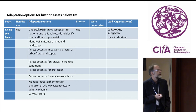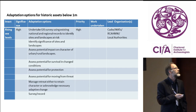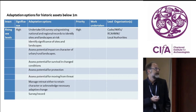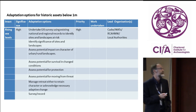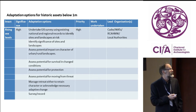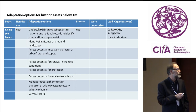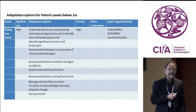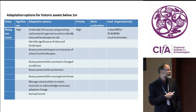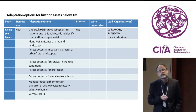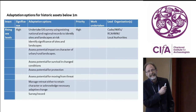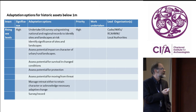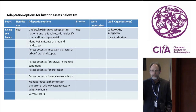Looking at adaptation options for historic assets below one metre: understanding and knowledge is one of the first things, and obviously we can't afford to carry out all the surveys again, so we use GIS surveys and existing national and regional records. We identify the significance of sites and landscapes, assess the potential to survive changing conditions, assess the potential impact on the character of urban and rural landscapes, consider potential for protection, potential for moving assets away from threat, and manage retreat — either to retain character or acknowledge the necessary change. This is where Neil's more positive approach comes in — not just accepting change but asking how we can take advantage of it.